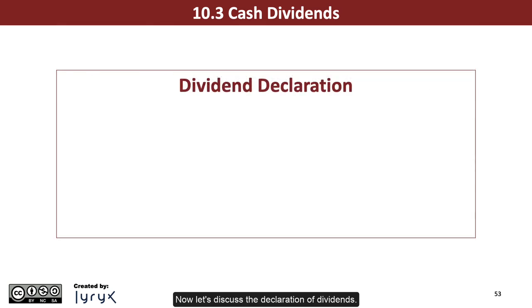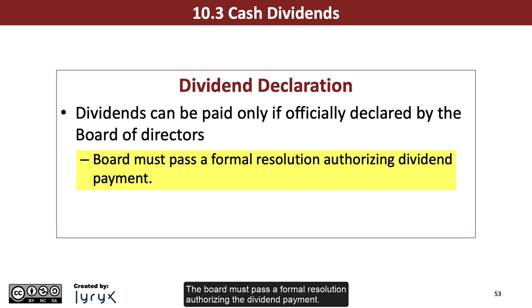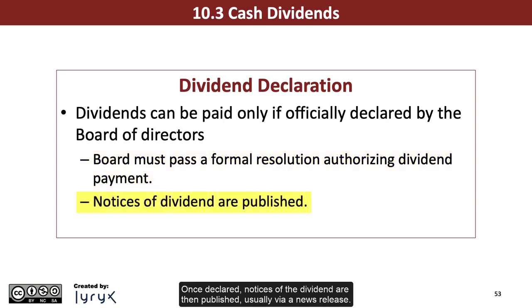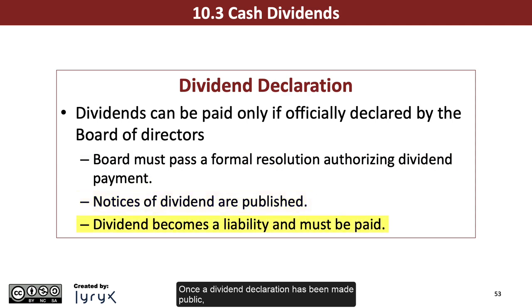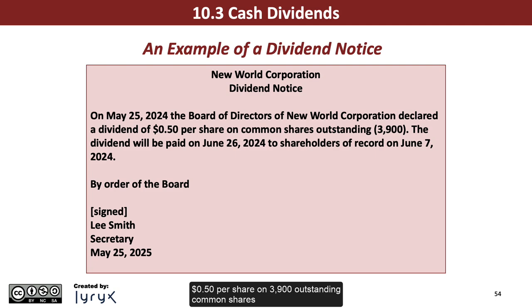Now let's discuss the declaration of dividends. Dividends can be paid only if they have been officially declared by the board of directors. The board must pass a formal resolution authorizing the dividend payment. Once declared, notices of the dividend are then published, usually via a news release. Once a dividend declaration has been made public, the dividend becomes a liability and must be paid. Here's an example of a dividend notice for New World Corporation announcing, on May 25, 2024, the declaration of a dividend of 50 cents per share on 3,900 outstanding common shares, to be paid on June 26, 2024, to shareholders of record on June 7, 2024.